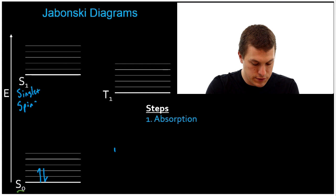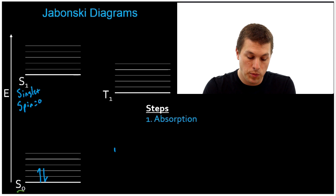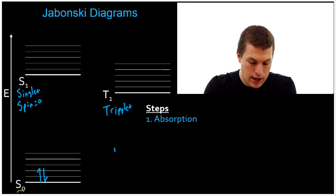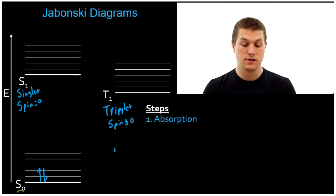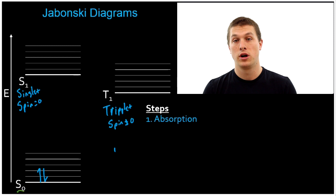The singlet state means that the spin equals zero. However, later on, if one of our electron spins flip, we'll be in the triplet state, which is what this T stands for — and there the spin will not be equal to zero. So S0 is the ground electronic state, also known as the highest occupied molecular orbital. S1 is the lowest unoccupied molecular orbital. And T1 is also a LUMO, but now we're in a triplet state where our electron spin has flipped.